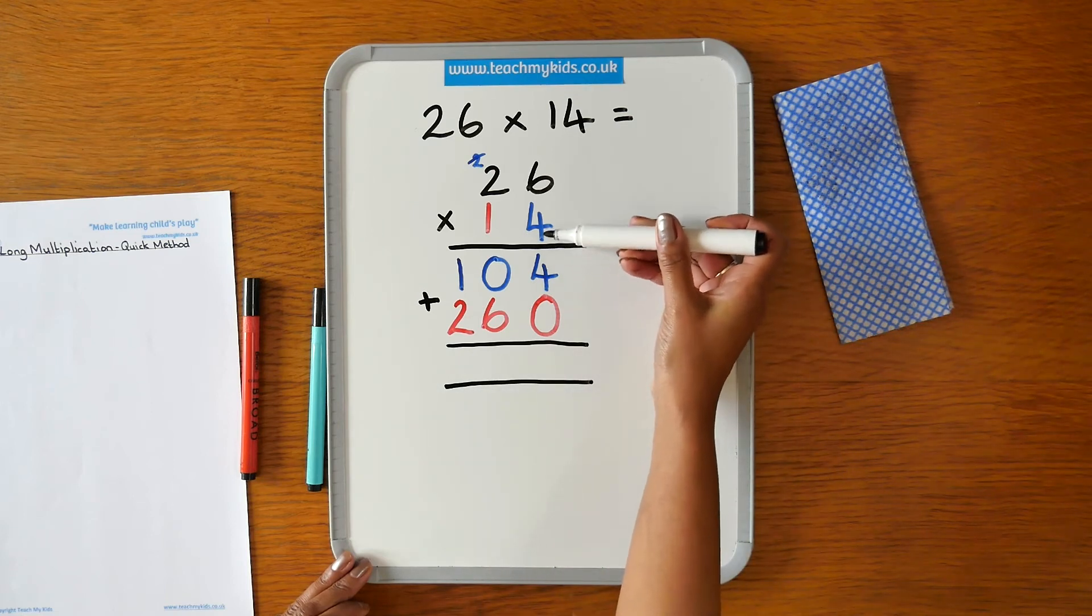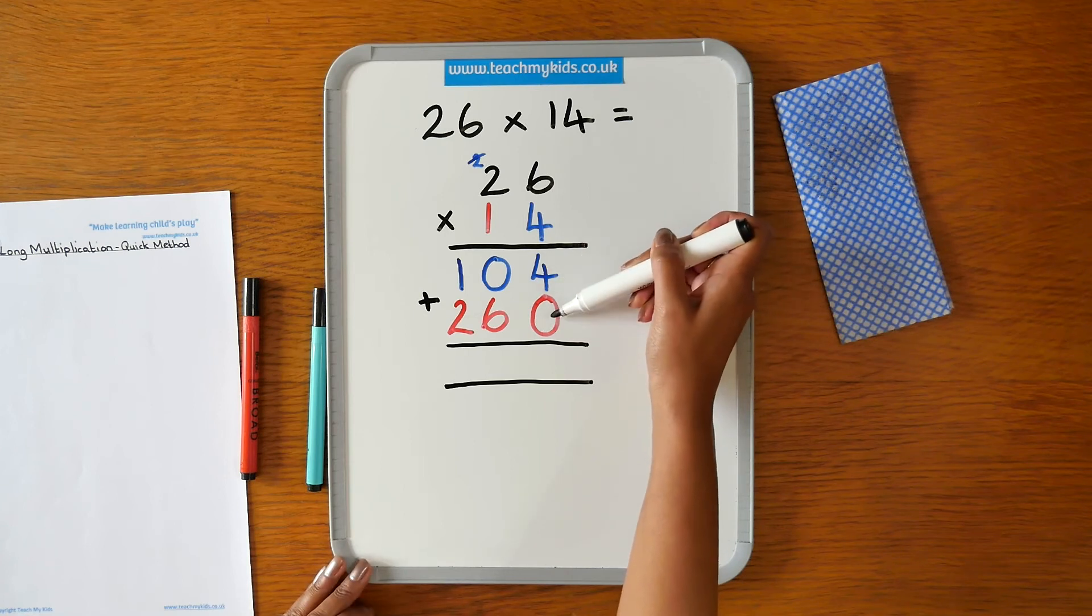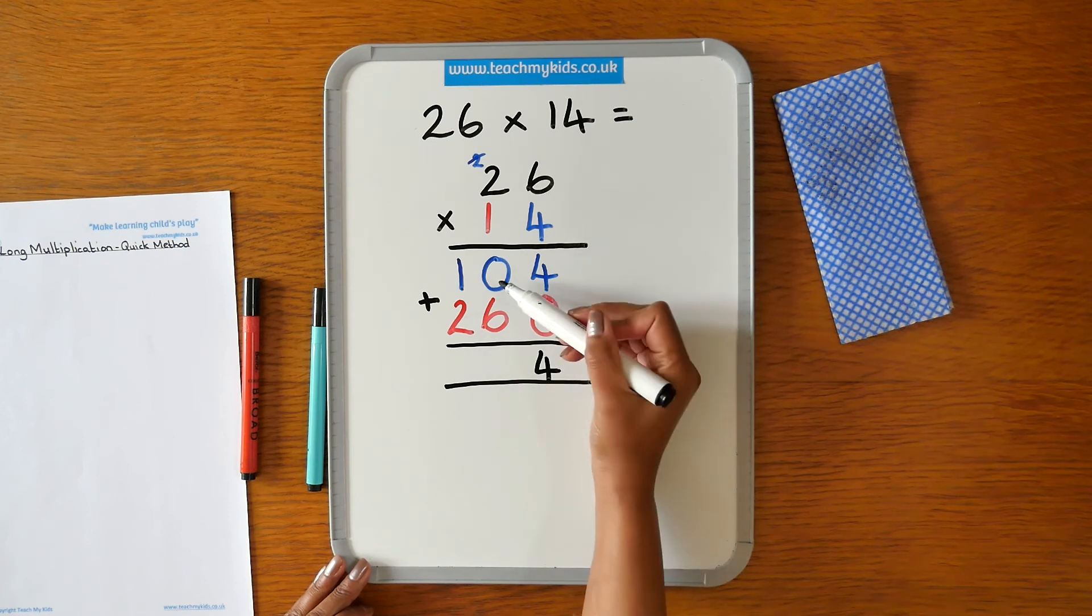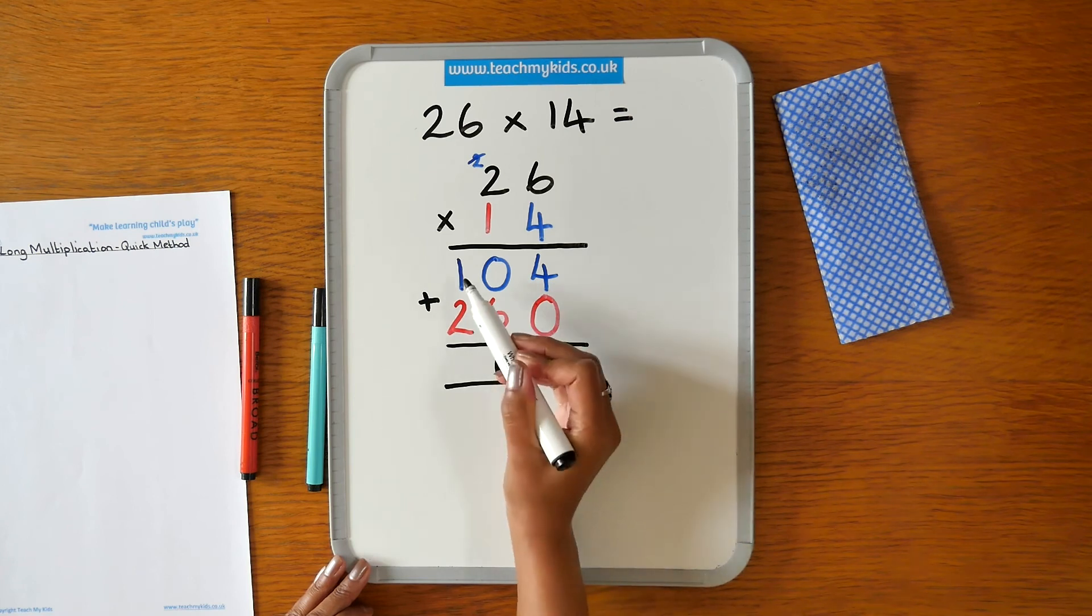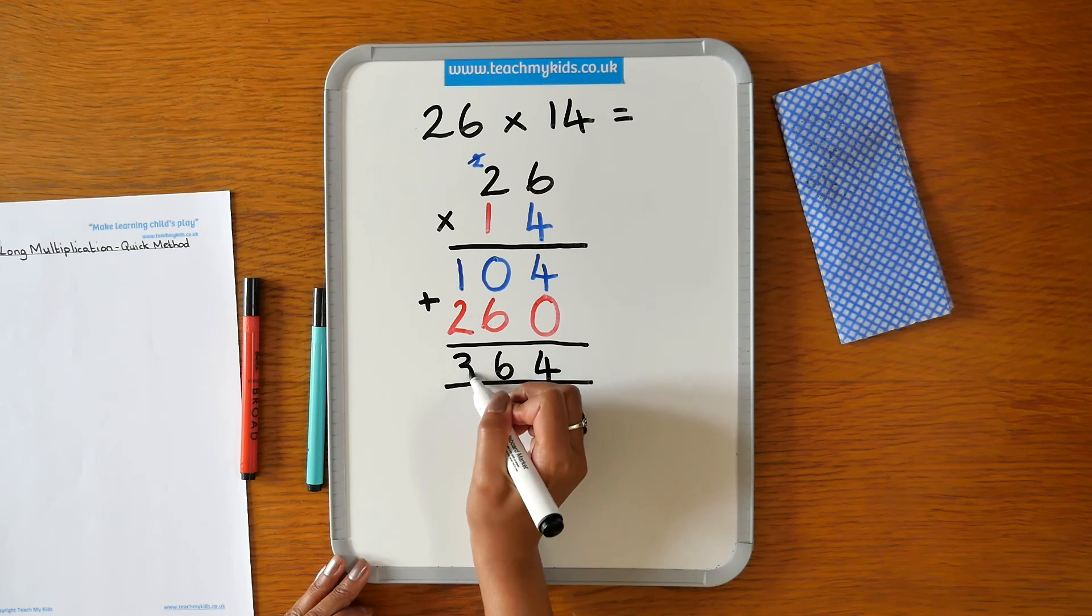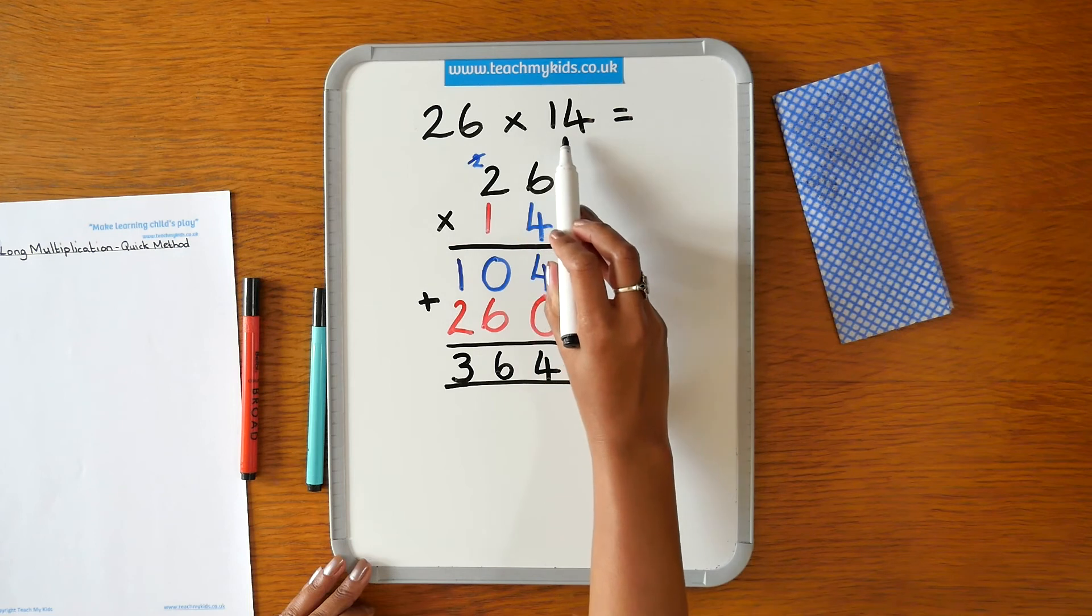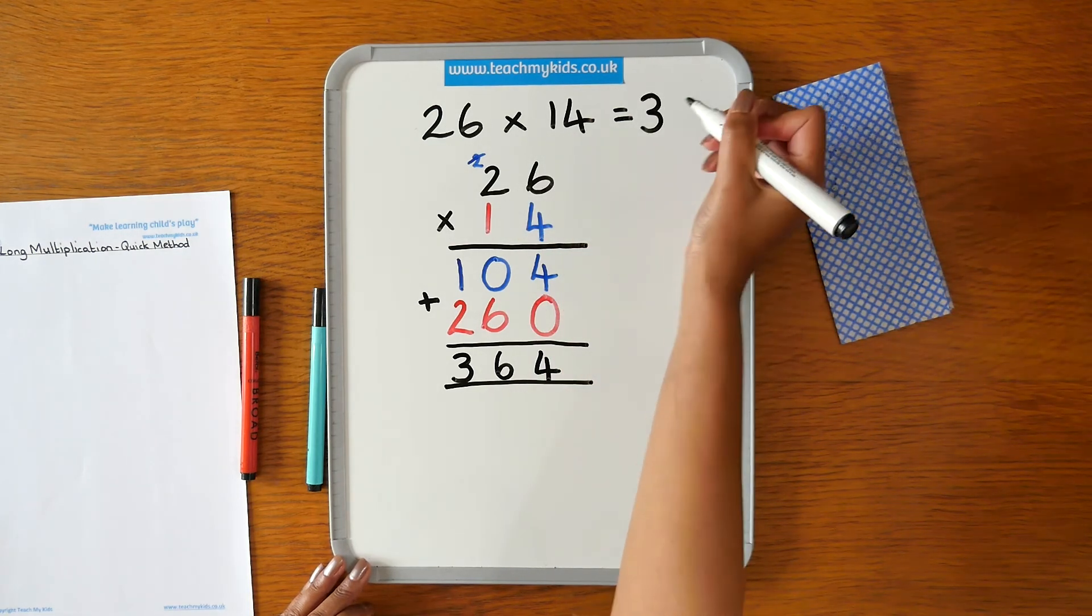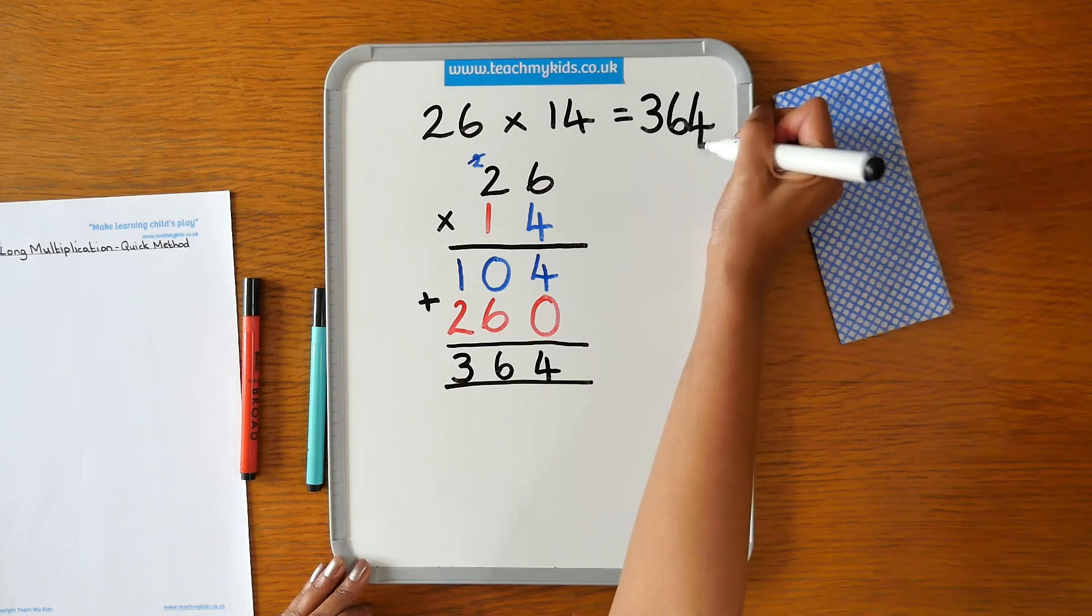Starting with the units column, we do 4 add 0 is 4, 0 add 6 is 6, 1 add 2 is 3. So our answer to 26 times 14 is 364.